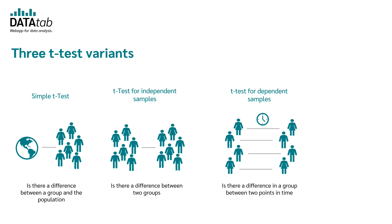There are three variants of the t-test: the simple t-test, the independent t-test, and the dependent t-test. The simple t-test is used to check whether there is a difference between a group and the population. This t-test is very often used in quality assurance — for example, to check whether a produced screw really has the given weight on average.